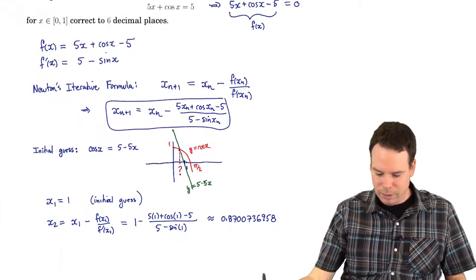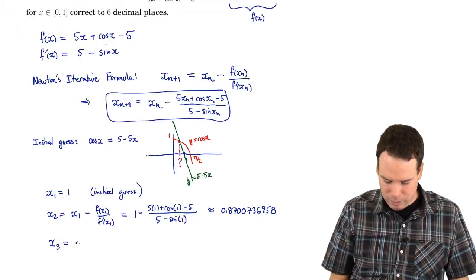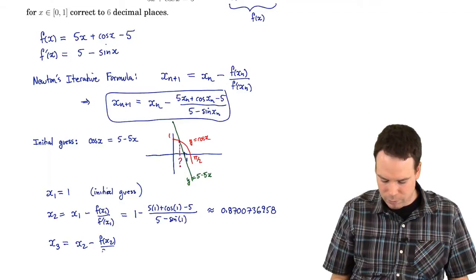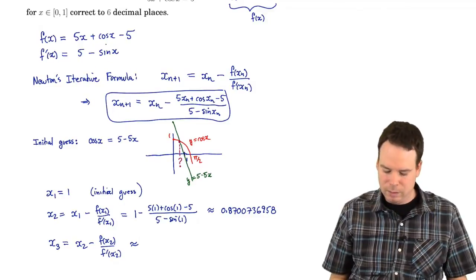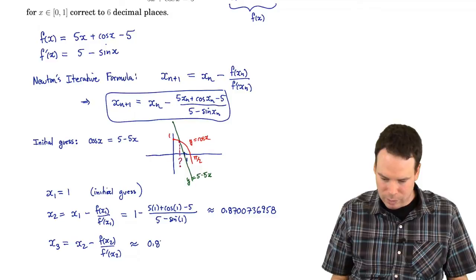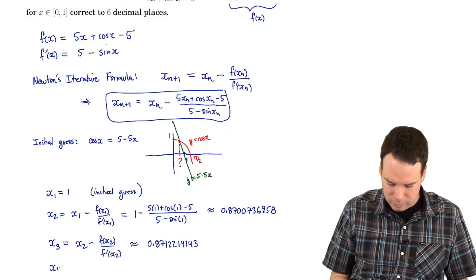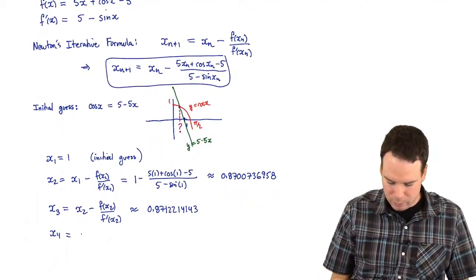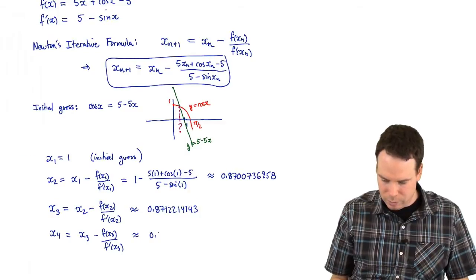Now we take that number and feed it back into Newton's iterative formula: x₃ = x₂ minus f(x₂) over f'(x₂). Firing that back in and doing the computation again, we get 0.8712214143. Now we take that number and fire it back into Newton's formula: x₄ = x₃ minus f(x₃) over f'(x₃), and what pops out is approximately 0.8712215145.